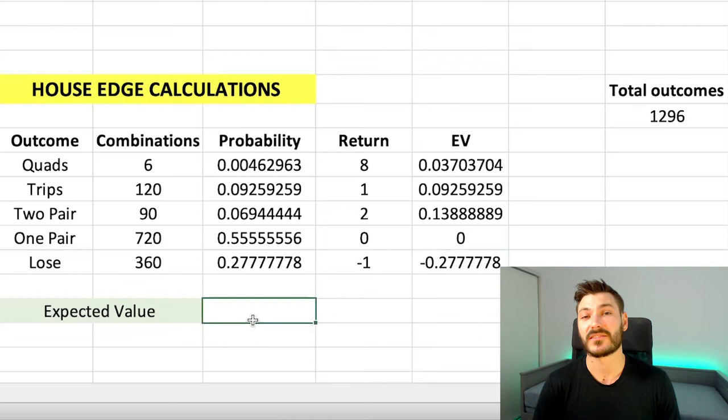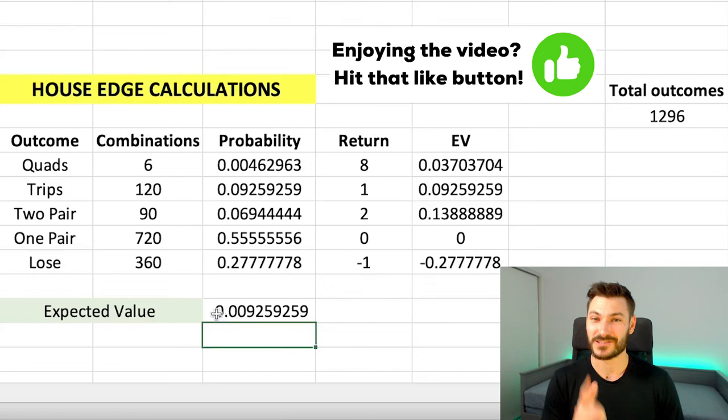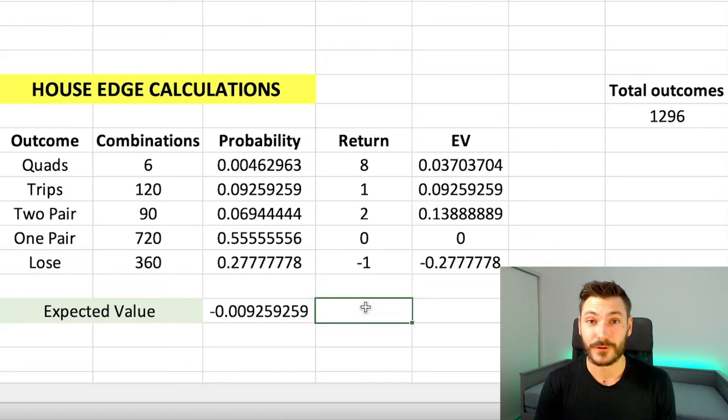To do that, we just need to sum up all of those EVs, those expected values. So equals SUM, bracket, all of these values, close bracket and hit enter. And it is a negative number, which is good for the house. It means the player on average, if they played this infinitely many times, on average per game where they bet $1, they are going to lose. That's what the negative denotes. They're going to lose just under $0.01. So yes, they're going to lose, but not very much at all. So we can expect there to be lots of swings for this player, lots of runs where they win lots of money, but then also runs where they lose a lot of money. And then in the end, they just lose a bit of money.